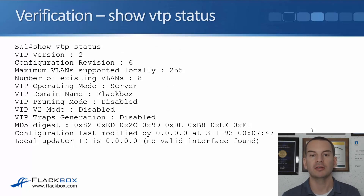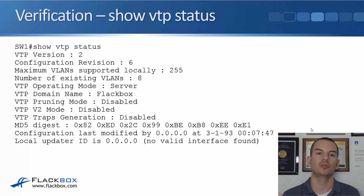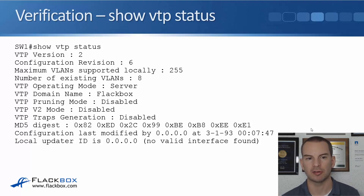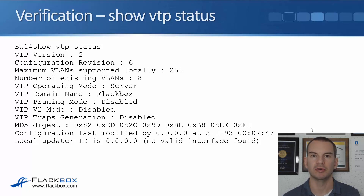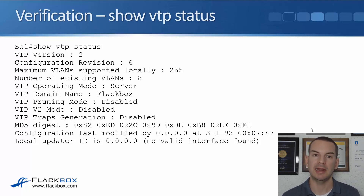All switches will then know about all VLANs, and you just need to configure the port level to put client PCs in the correct access ports. To verify VTP, use 'show vtp status' — this shows the domain name, the mode (client, server, or transparent), and the current revision number. That's the theory for VTP; in the next lecture we'll configure it in the lab.